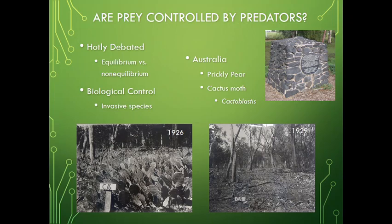There's a question of whether prey are actually controlled by predators. We know there are lots of predatory interactions, but are the populations of prey actually controlled by predators? This is part of that equilibrium versus non-equilibrium debate that has been debated for 30 to 40 years and is still somewhat up for debate. When we think of invasive species, we see that prey populations can definitely be controlled by predators.